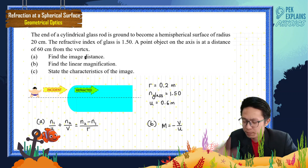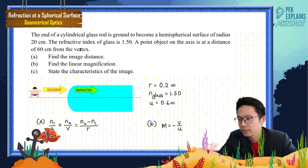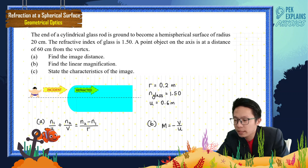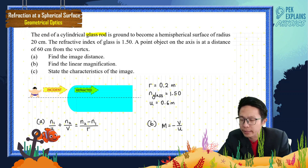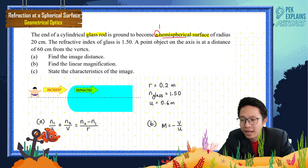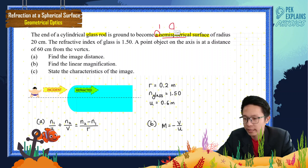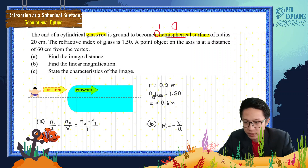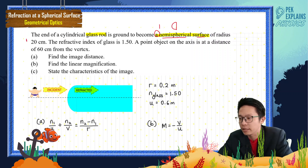First, we must picture out what is actually described in the question. It is a cylindrical glass rod, and the end becomes a hemispherical surface — just one surface. We only consider one spherical surface. Hemispherical means half of a sphere, and this hemispherical surface has a radius of 20 cm.